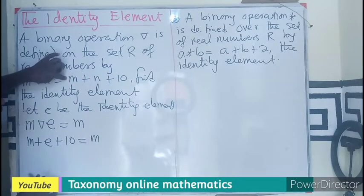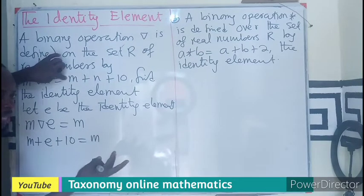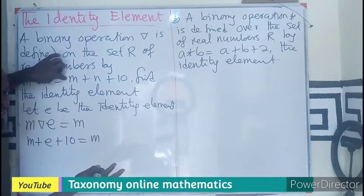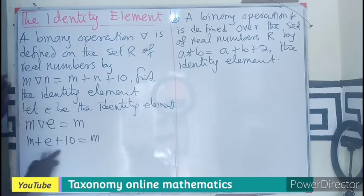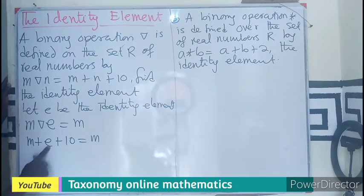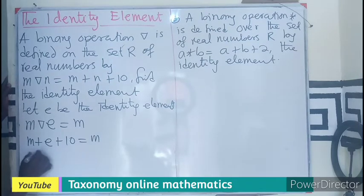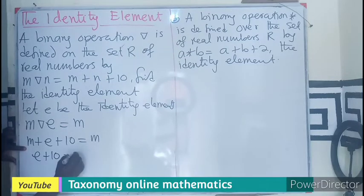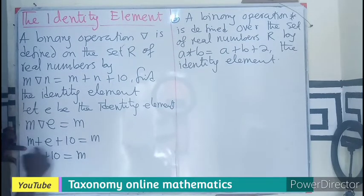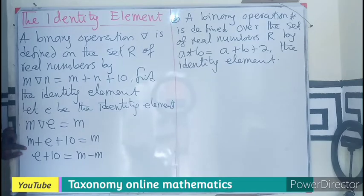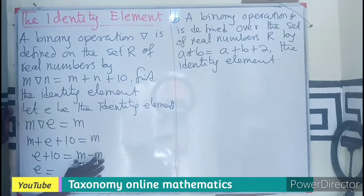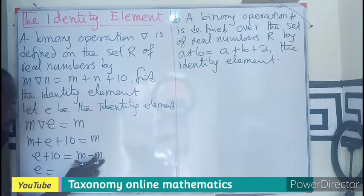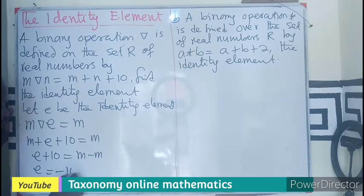What I said is that we normally use the operator, let E be the identity element, and third, solve for your E. So let's solve for E. Maintaining the E here, we have E plus 10 equals to this M minus M. So what happened again? I'm going to have E equals to, don't forget, M minus M is 0. Then this becomes minus 10.